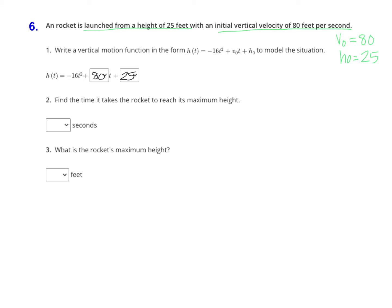Now that we have our equation written, we want to find the time it takes the rocket to reach its maximum height. Remember this is a quadratic equation. It has that t squared and it's negative, so we know that it's going to be a parabola that opens down. The maximum height is just the vertex of the parabola. This point right here is the max height, and the max height occurs at the vertex.